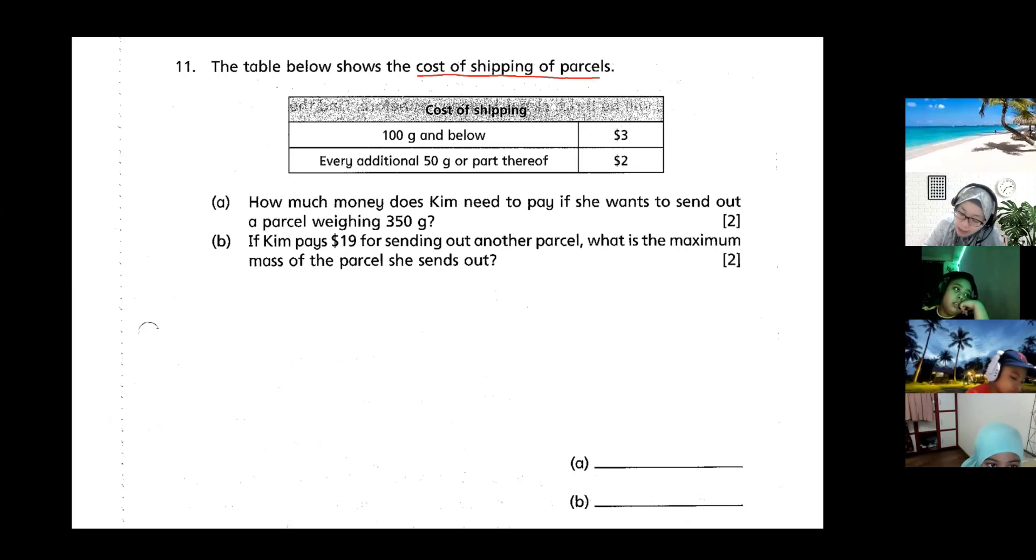How much money does Kim need to pay if she wants to send out a parcel weighing 350 grams? You need to know how to read the table. They say that 100 gram and below is three dollars. Anything more than 100 gram, it is two dollars for every additional 50 gram.